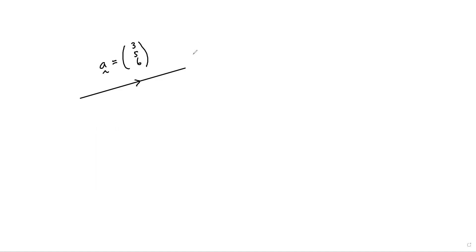So how do we find the magnitude of a vector in the first place? The magnitude of a is 3 squared plus 5 squared plus 6 squared and square root. So that's just going to give us square root of 9 plus 25 plus 36.